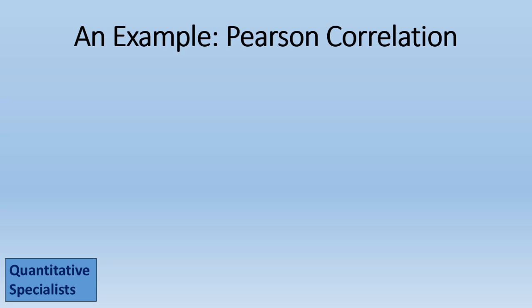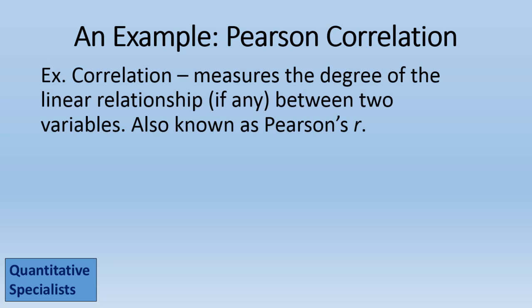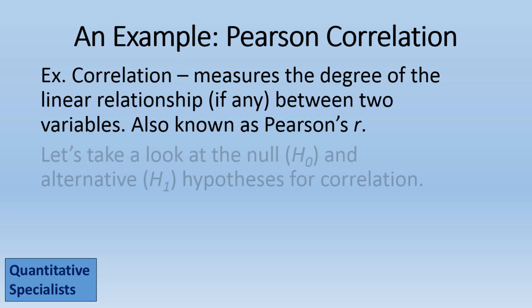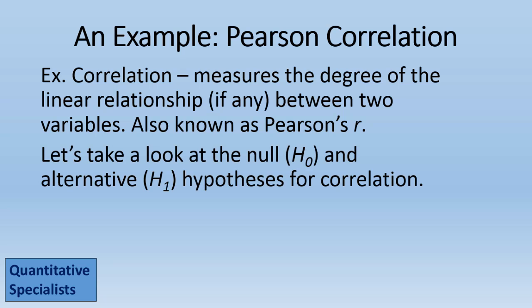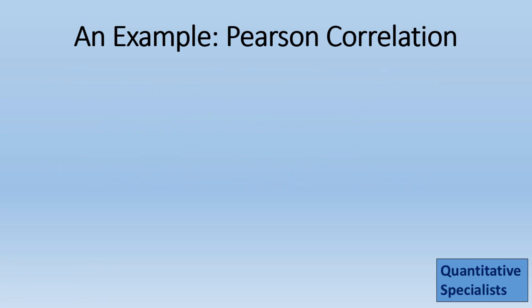Let's take a look at an example using the Pearson correlation, or Pearson's R. Correlation measures the degree of the linear relationship — if there's any at all — between two variables, also known as Pearson's R. Let's look at the null and alternative hypotheses for Pearson's R.